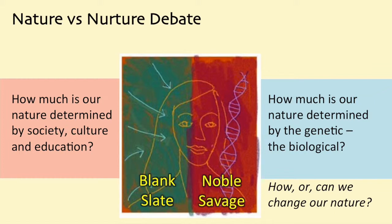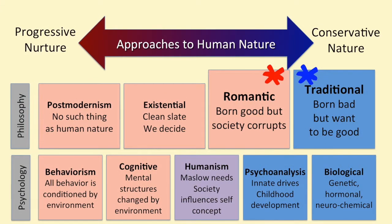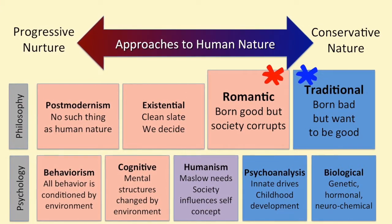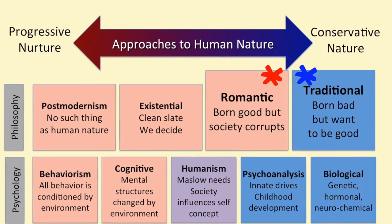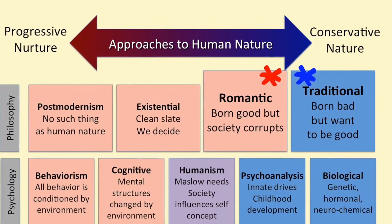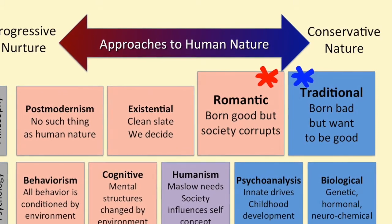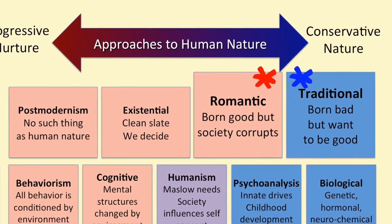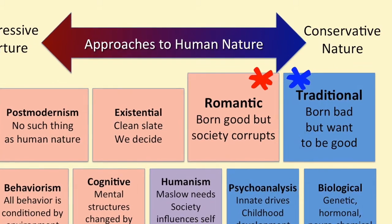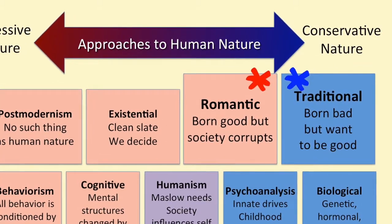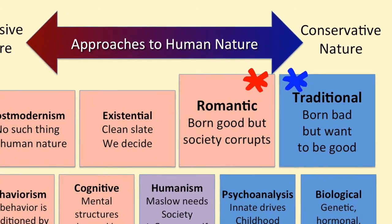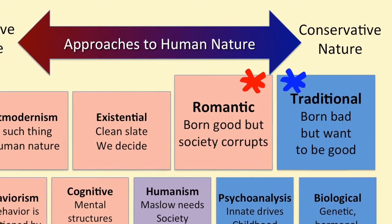How much of our nature can we change? Are you a noble savage? In this chart, we can start to understand why it is so difficult for us to agree on something such as human nature. There are numerous schools of philosophical thought, as well as numerous psychological theories about what constitutes human nature. If we are interested in digging deeper into what divides conservatives and progressives, look into the traditionalist and romantic schools of thought.